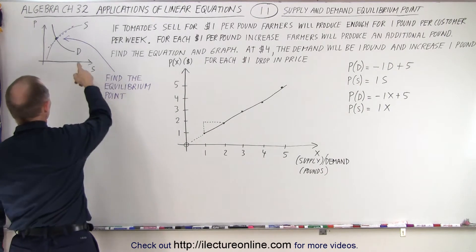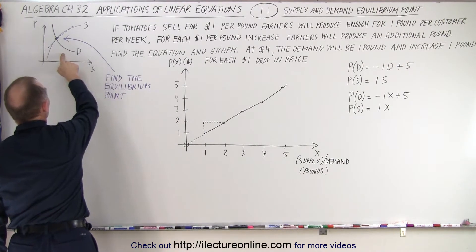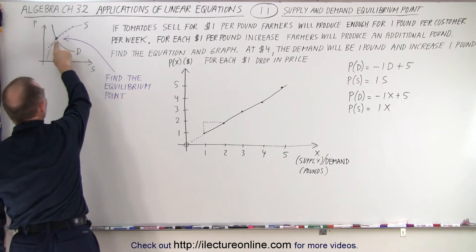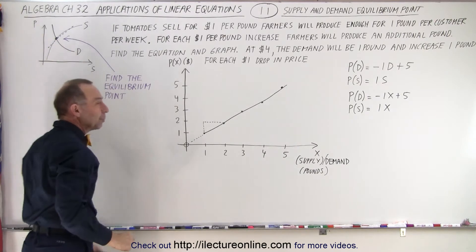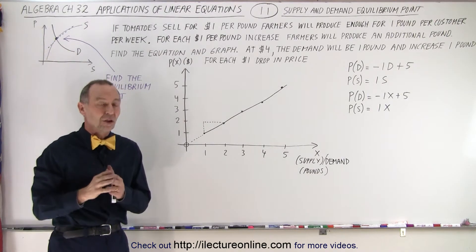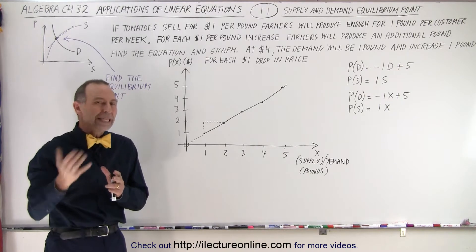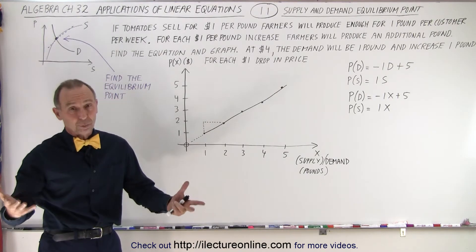And here we can see that if it's not a linear function for both, we can still see that there's some point where the two graphs will cross, and that's called the equilibrium point. That's where the price is such that the demand will equal the supply, and that's where you want to be.